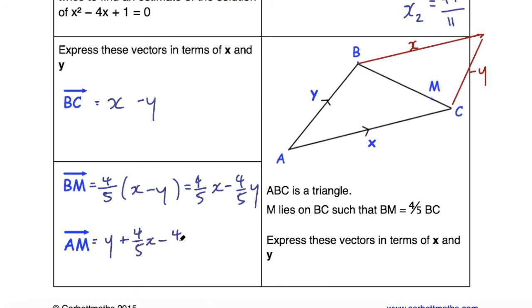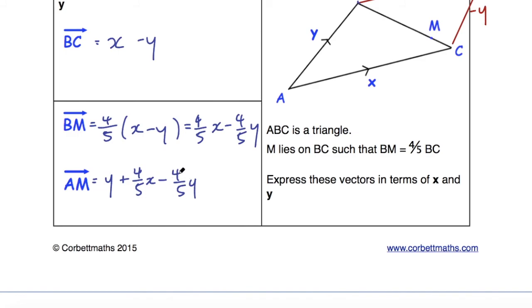And y - (4/5)y—well, that will be (1/5)y—so AM ends up being (4/5)x plus (1/5)y.